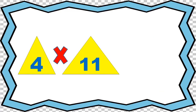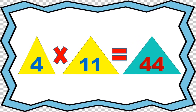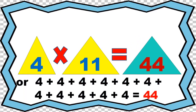4 times 11 equals 44, or 4 plus 4 plus 4 plus 4 plus 4 plus 4 plus 4 plus 4 plus 4 plus 4 plus 4 equals 44.